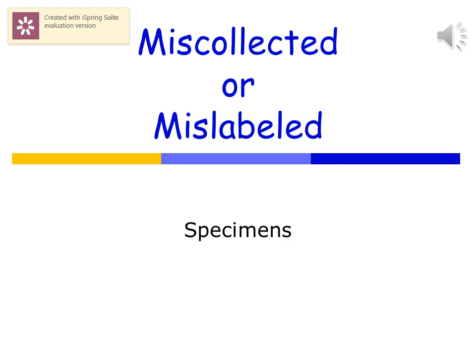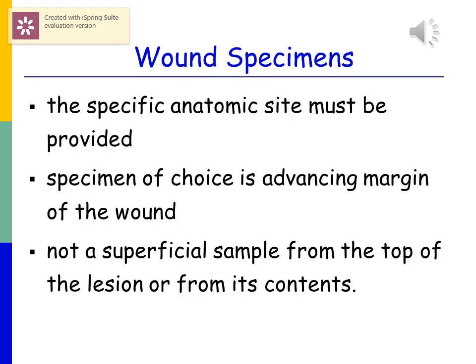One of the common errors is miscollected or mislabeled specimens. For a wound specimen, the anatomic site must be provided — for example, the left forearm. The specimen of choice is the advancing margin of the wound. You wouldn't want to just swab around the wound because you're going to get skin flora. You don't want a superficial sample from the top of the lesion; you want to really get into that wound to figure out what organism might be involved in an infection.